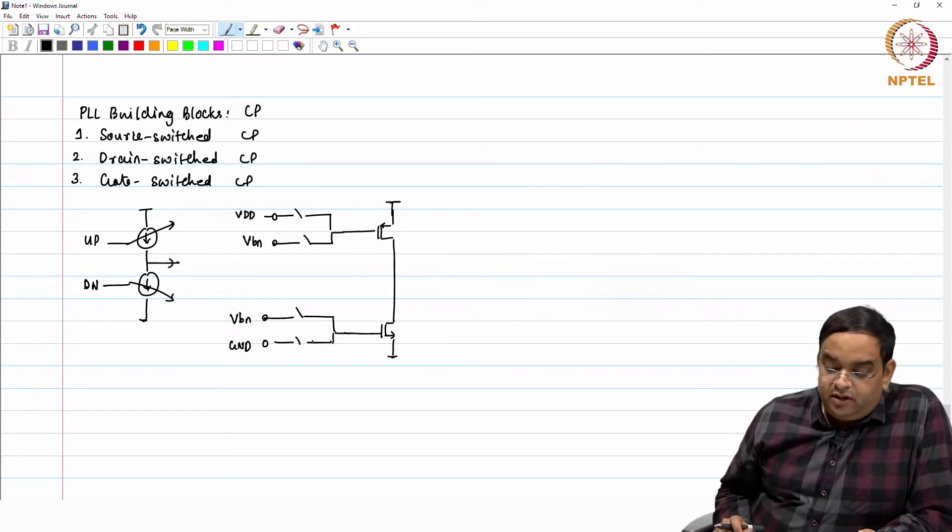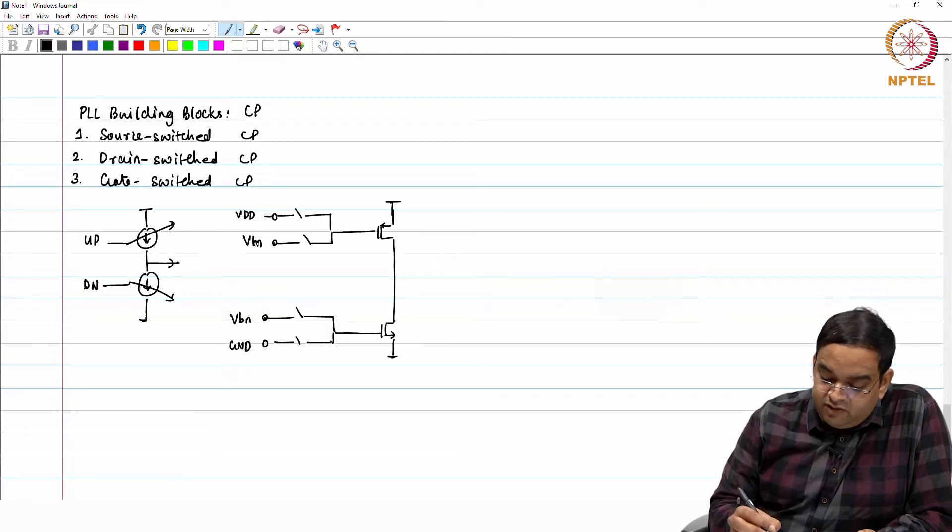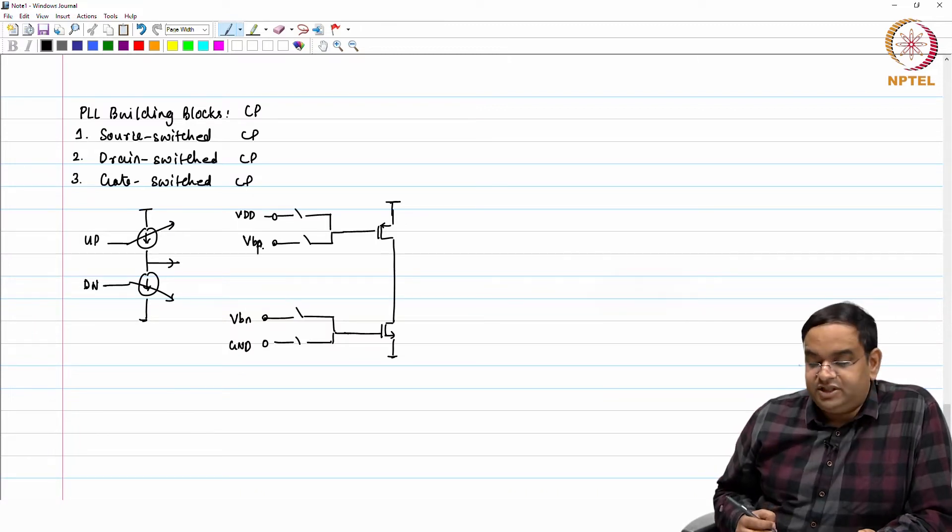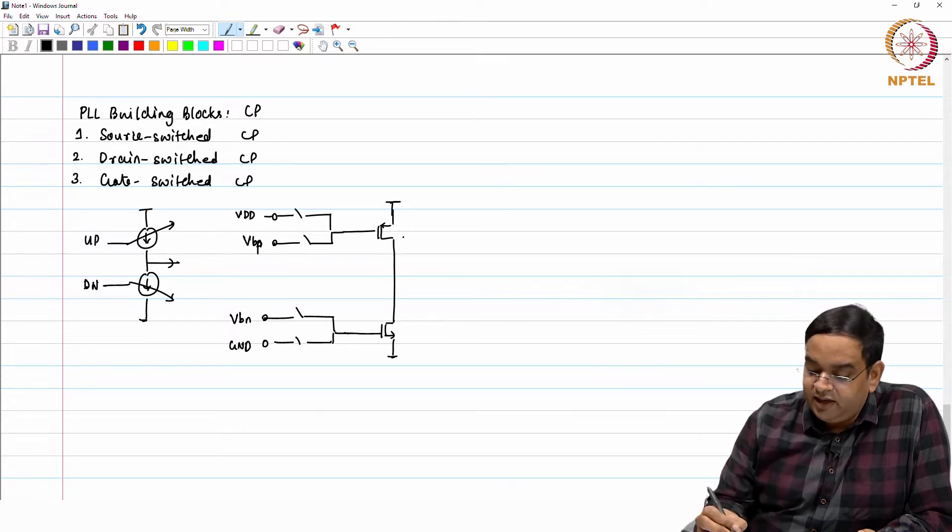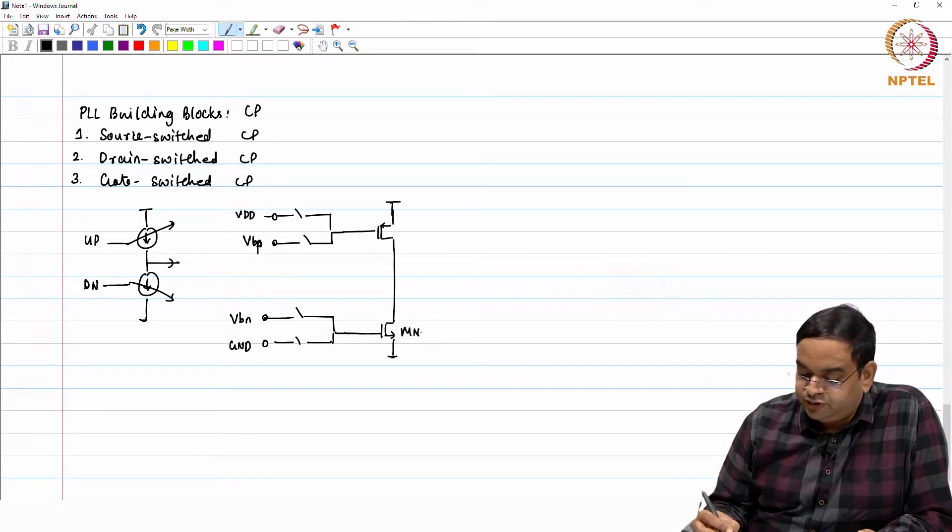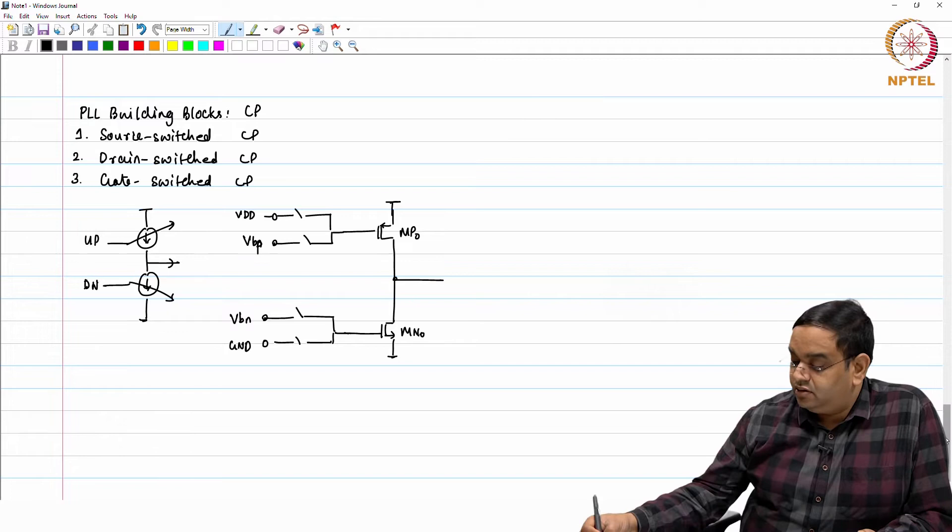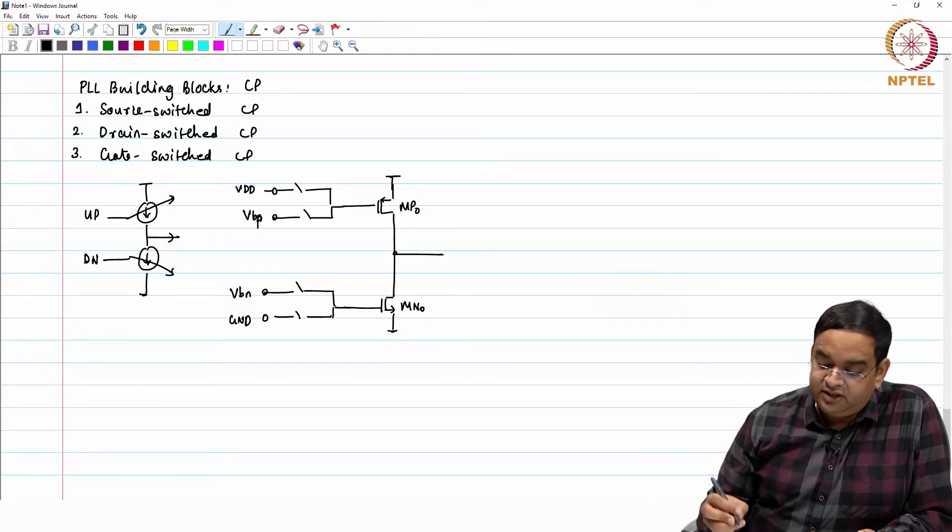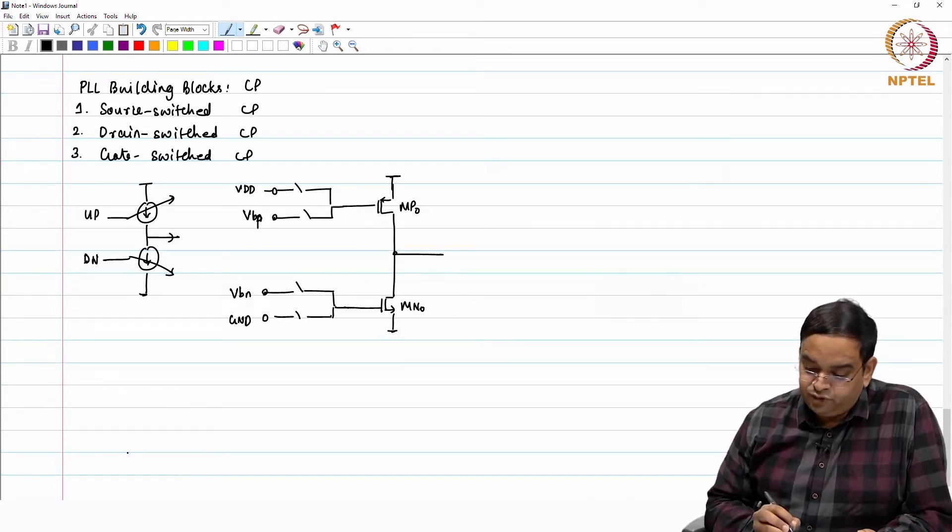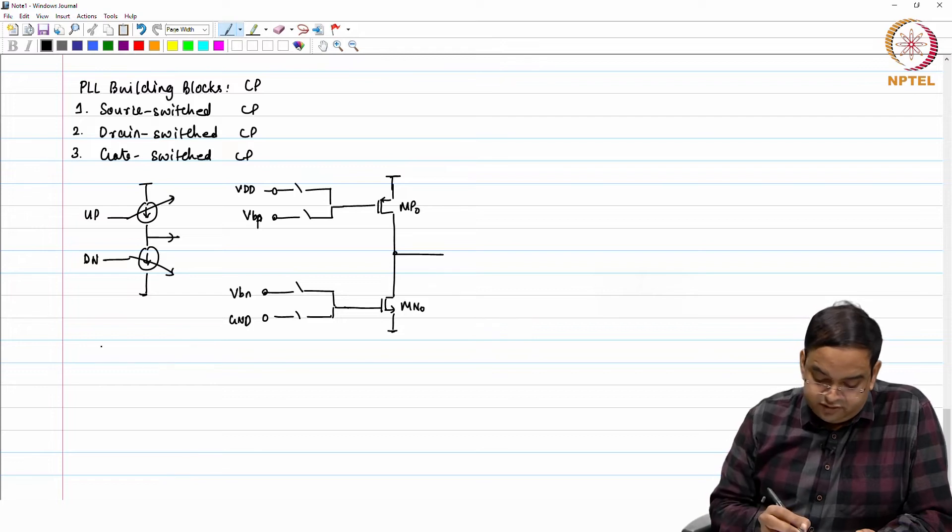V1 is already there. VBP and V1 are the bias potentials which I generate and with these bias potentials, I enable or disable my current sources. This is MN0, this is MP0. How can I easily implement this? This is the way I have shown you is more of an ideal case.